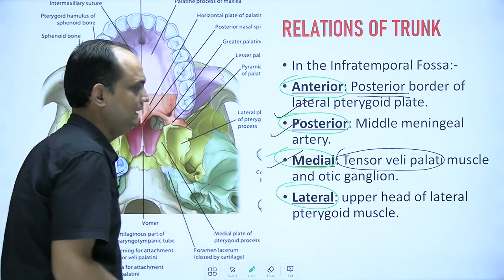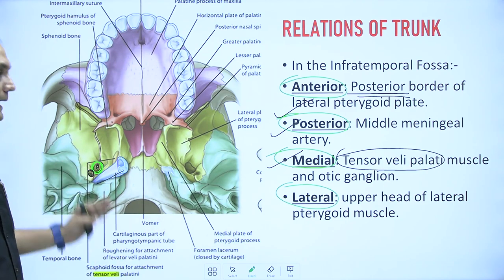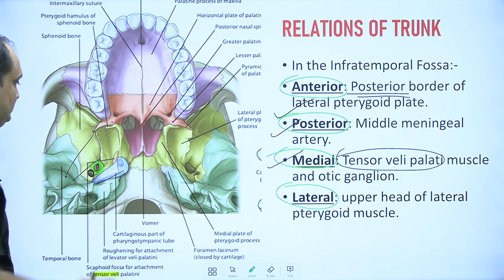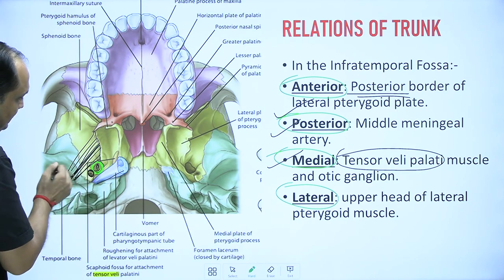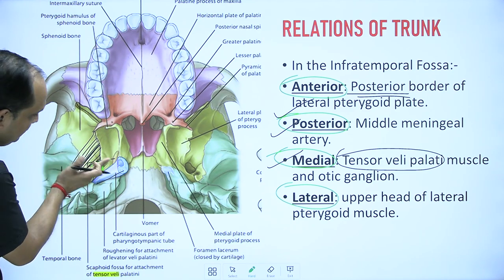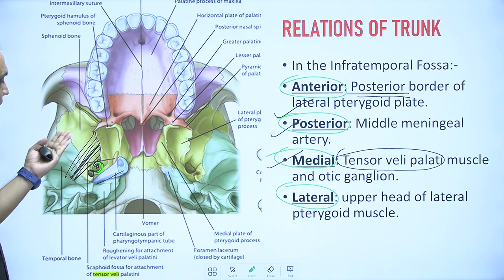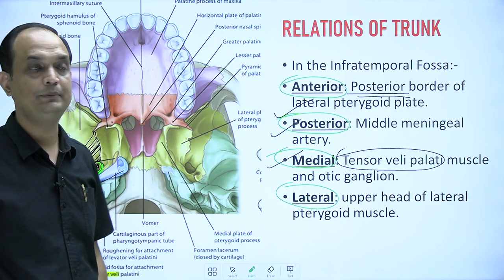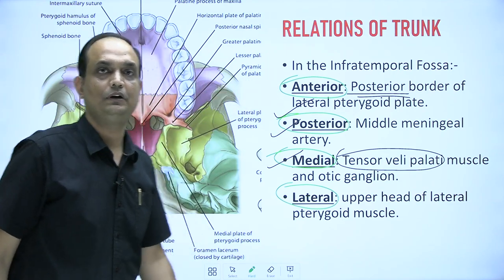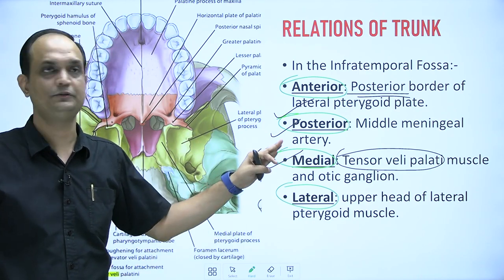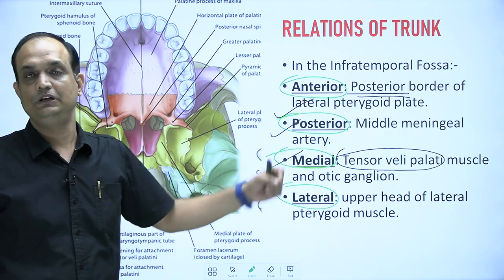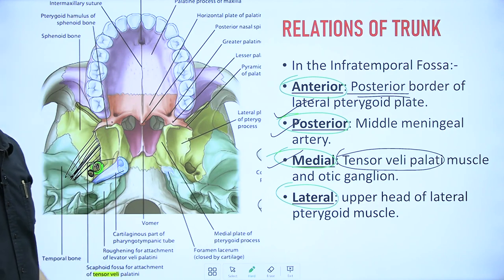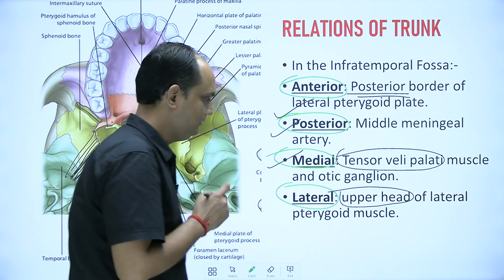To summarize the relations: anteriorly is the posterior border of the lateral pterygoid plate; posteriorly is the middle meningeal artery entering through the foramen spinosum; medially is the tensor veli palatini arising from the scaphoid fossa and the adjacent cartilaginous auditory tube, plus the otic ganglion; and laterally is the lateral pterygoid muscle, more specifically its upper head.